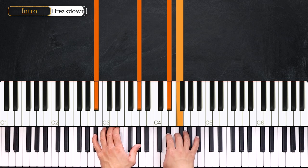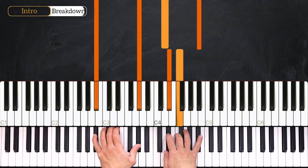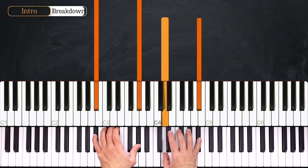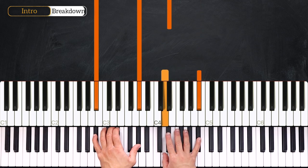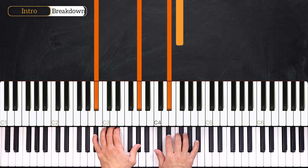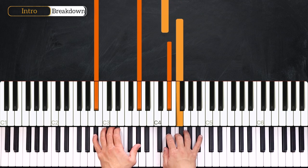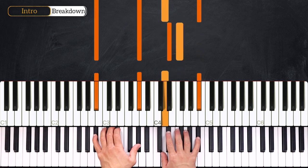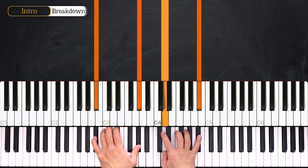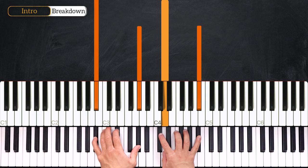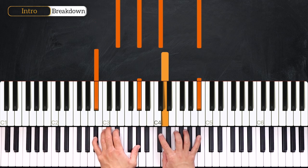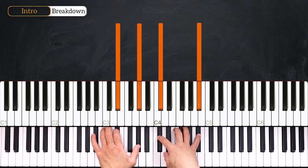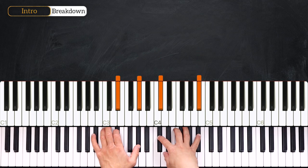Bb7sus4. From here we'll resolve this chord like this. So right hand was on Eb, F. And we'll resolve it by playing D, Bb. And then we play the very last chord of the progression which is Eb7sus4. Very nice!